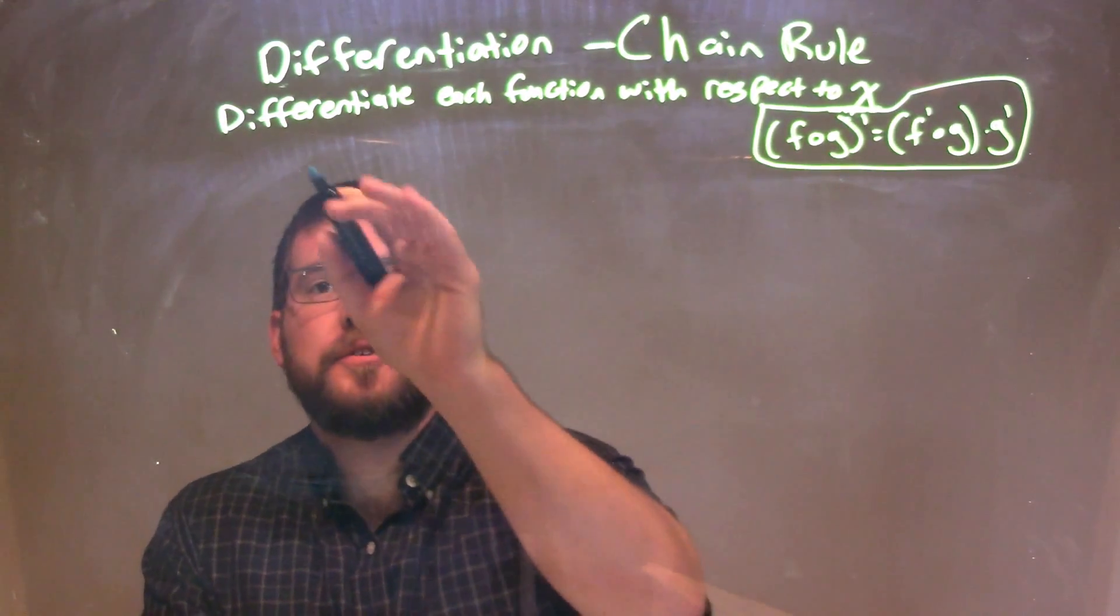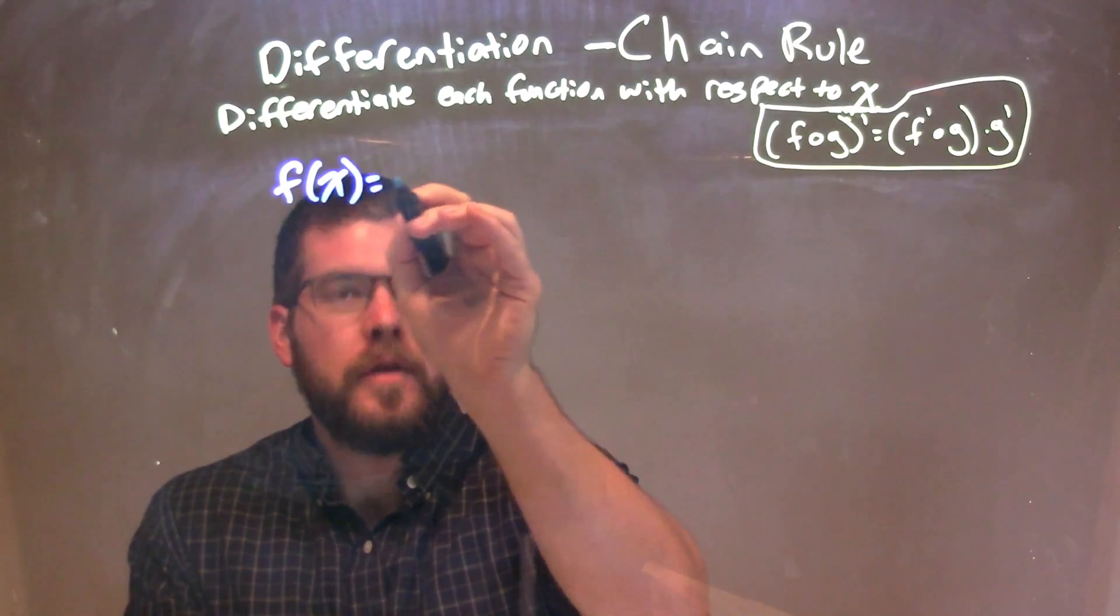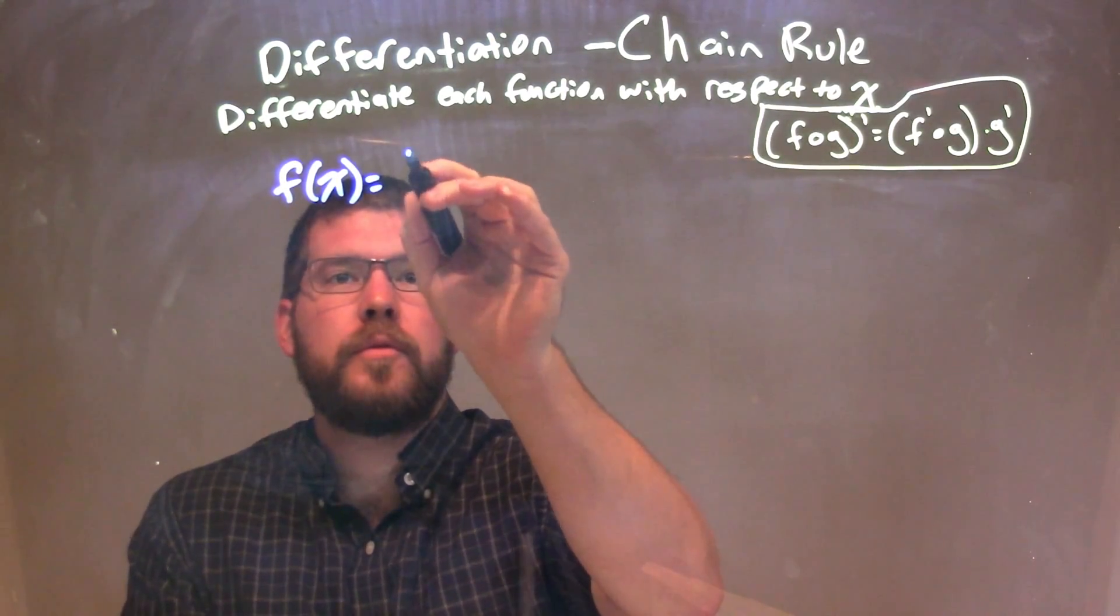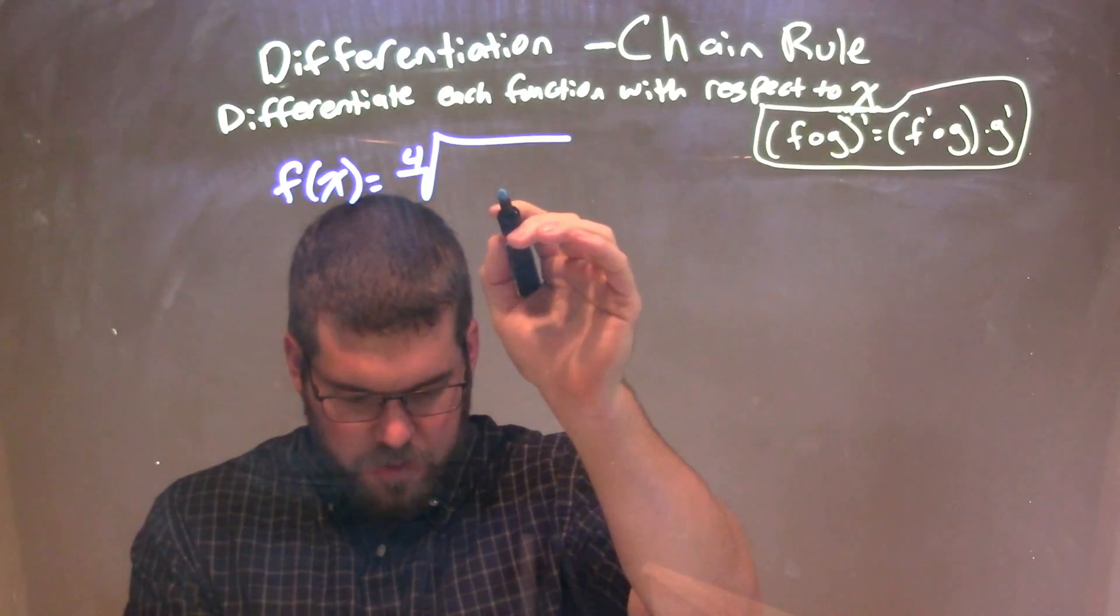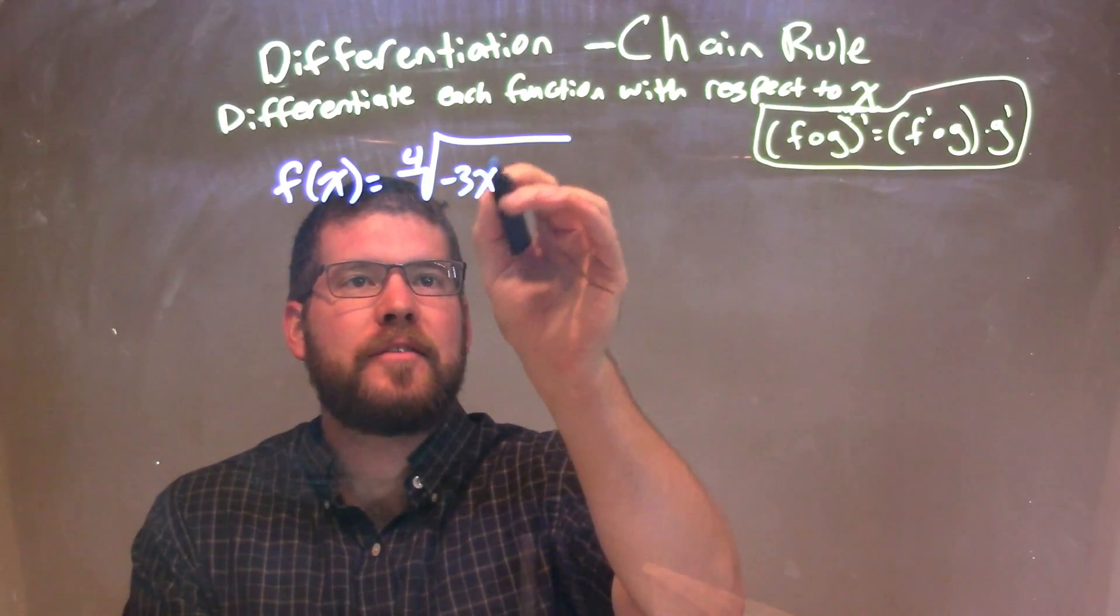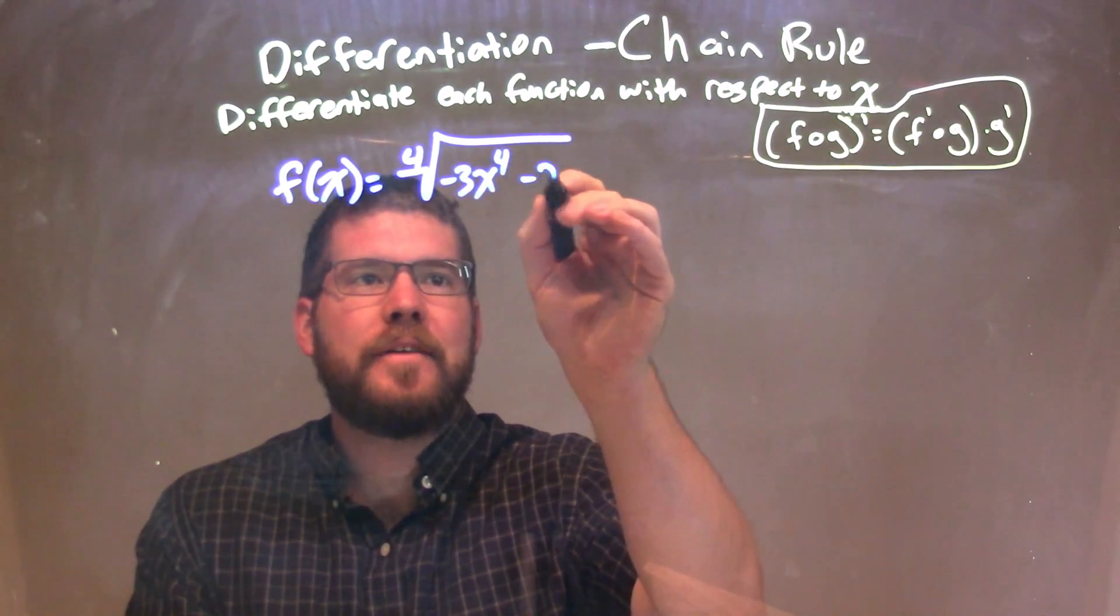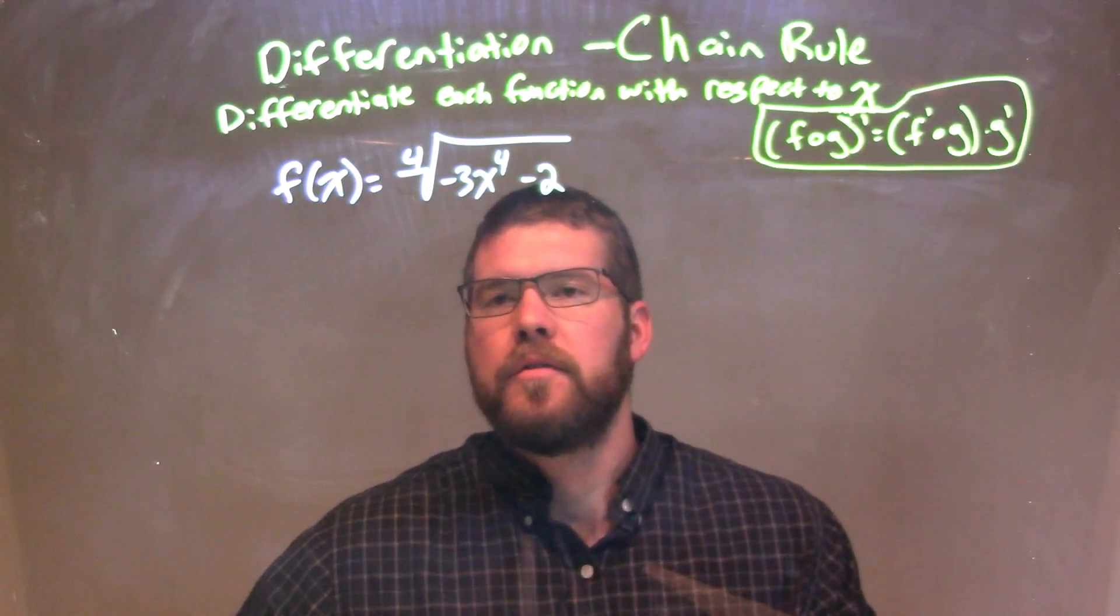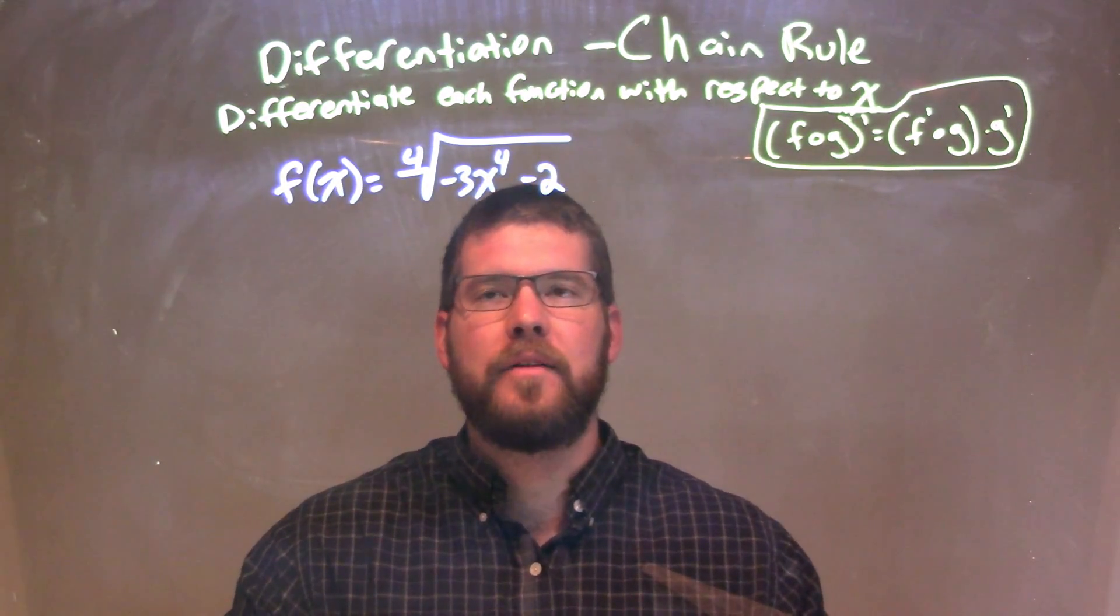So if I was given this function, f of x equals the fourth root of negative 3x to the fourth minus 2. It's the fourth root of negative 3x to the fourth minus 2.